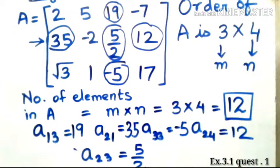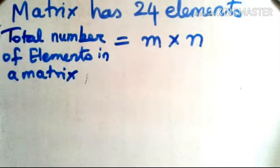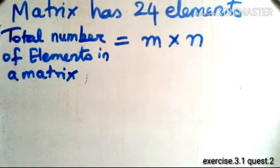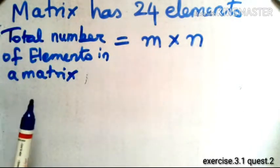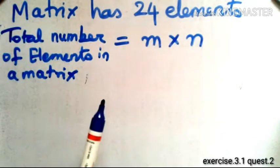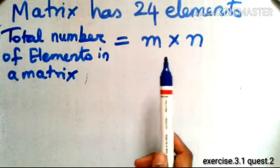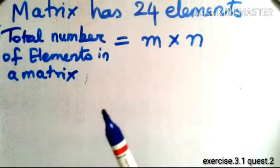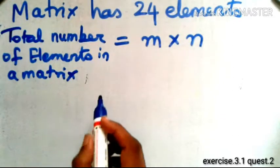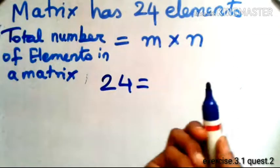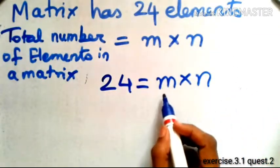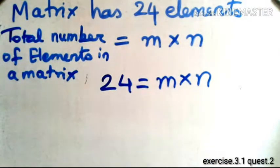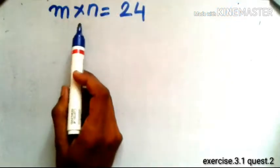The next question states that a matrix has 24 elements and we have to find all the possible orders. The formula we use is: the total number of elements in a matrix equals the product of the number of rows and the number of columns. So we have 24 = m×n. Since there are two unknowns and one equation, we can only find the possible orders.